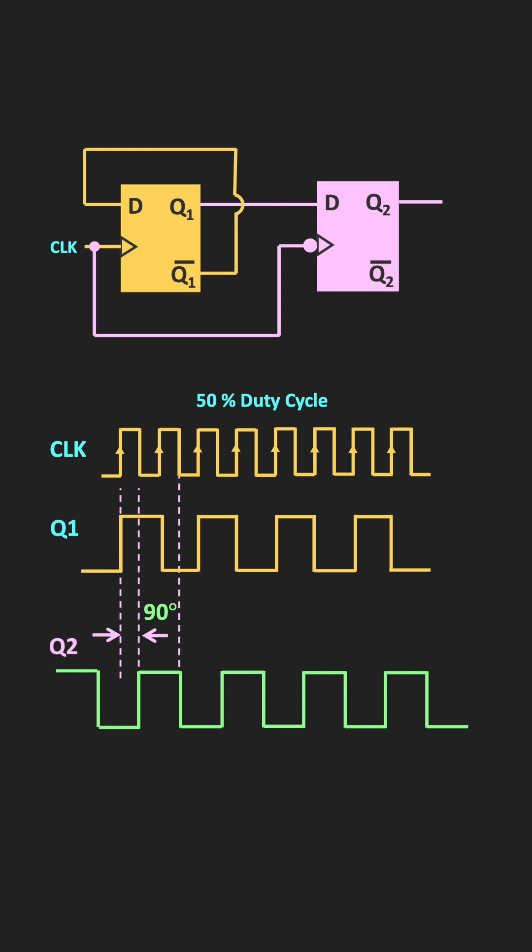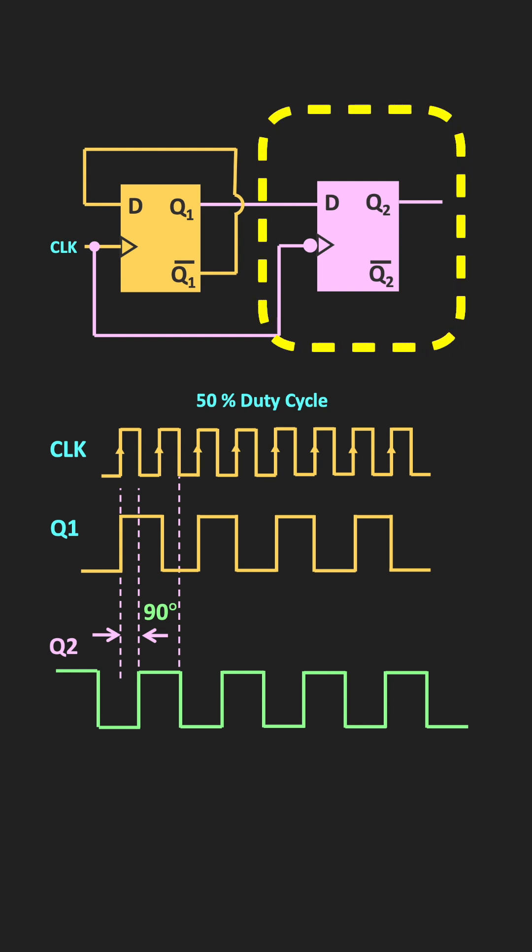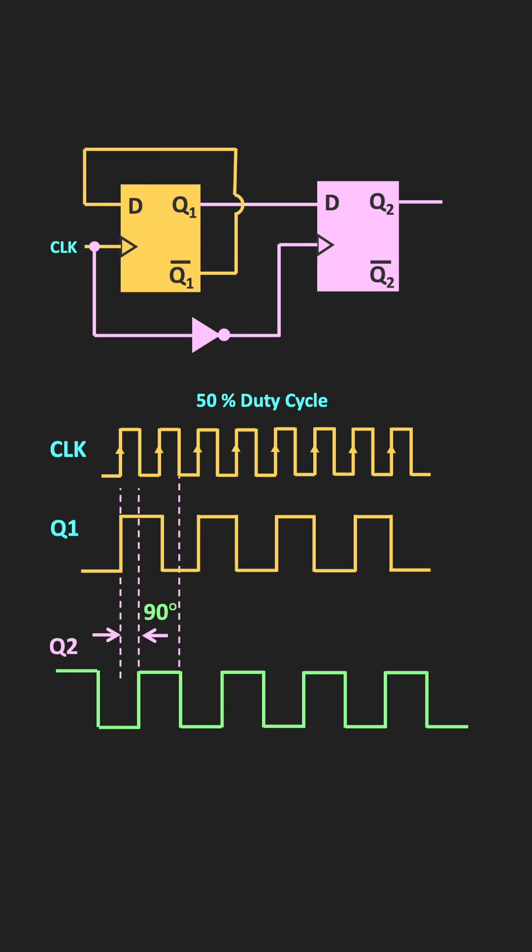Now, instead of the negative-edge-triggered flip-flop, suppose we have a positive-edge-triggered flip-flop. Then in that case, we need to apply the clock signal to the second flip-flop via an inverter. Here we are assuming that the delay of this inverter is negligible. So in this way, it is also possible to generate two signals which are 90-degree phase shifted with respect to each other.